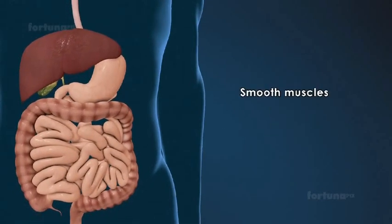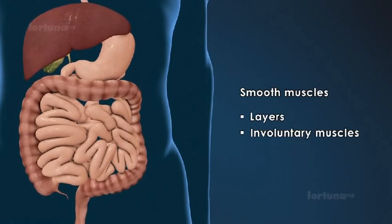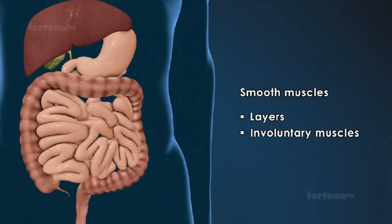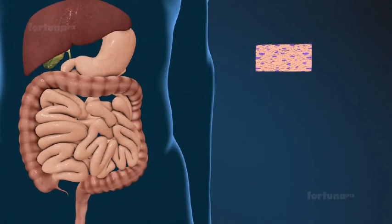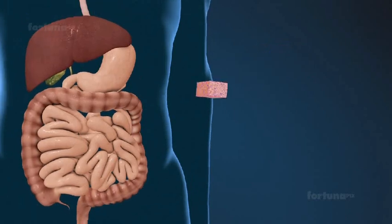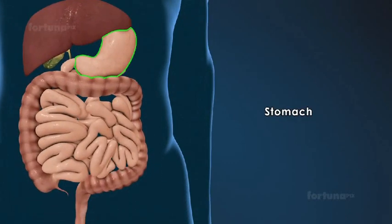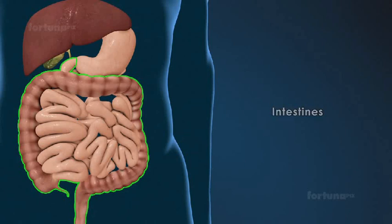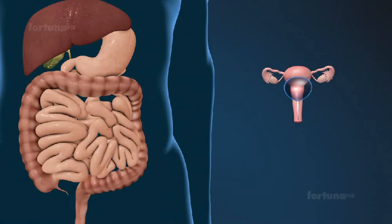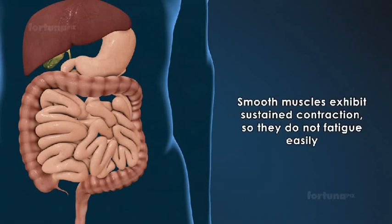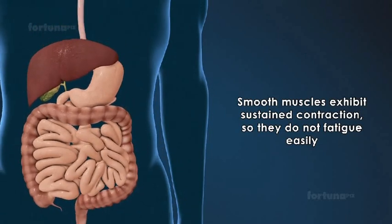Smooth muscles appear smooth and are usually arranged in layers. They are involuntary muscles and cannot be consciously controlled. Smooth muscles are found in the digestive system within the esophagus, stomach, intestines, urinary bladder, and the uterus in women. Smooth muscles exhibit sustained contraction, so they do not fatigue easily.